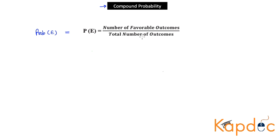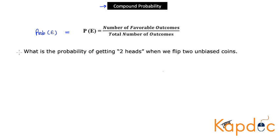Both cases — dependent and independent events — will be utilized in understanding two different methods of calculating compound probability. The first one is known as the matrix method. Consider this scenario: we are interested in calculating the probability of getting two heads when we flip two unbiased coins together.